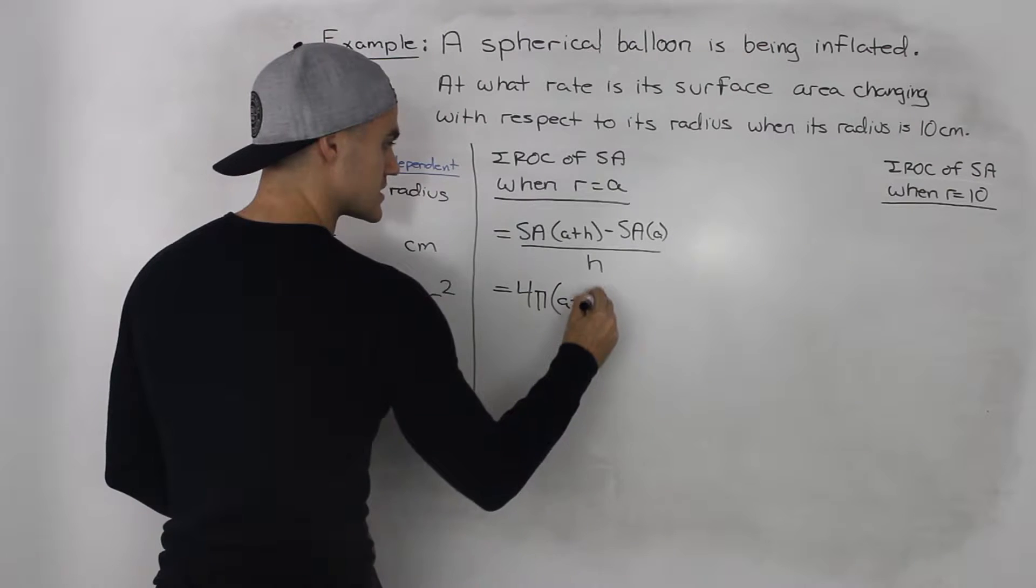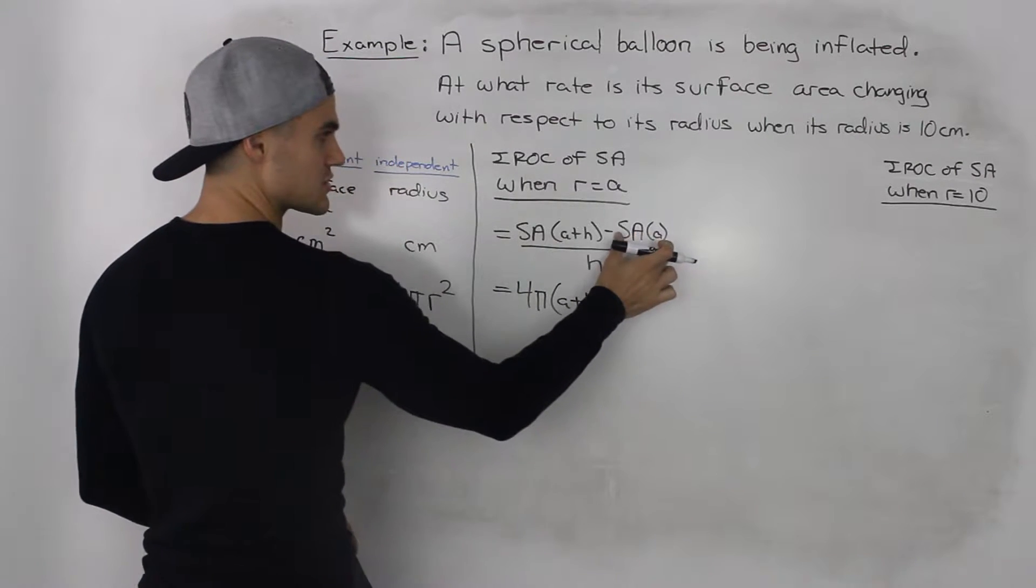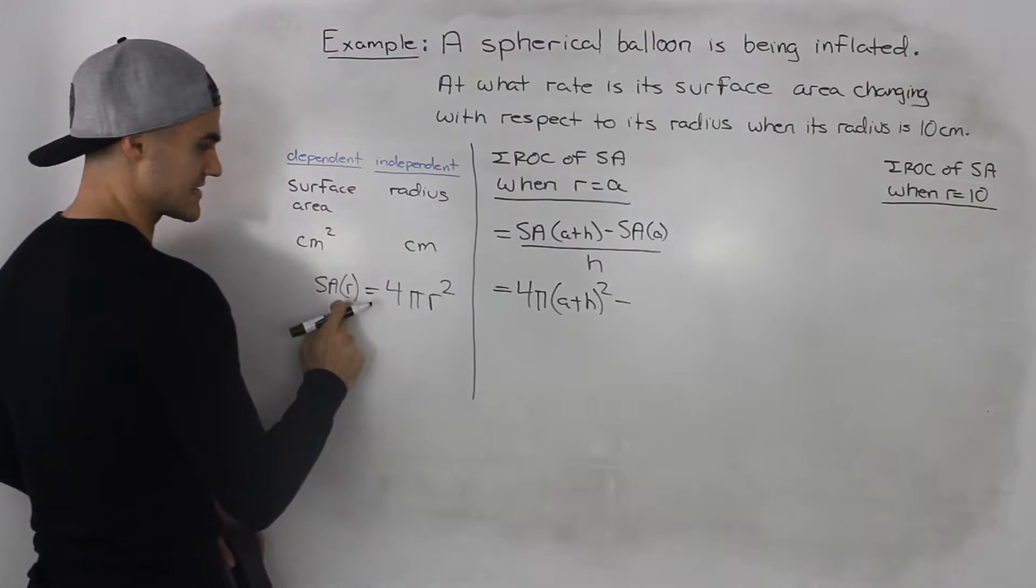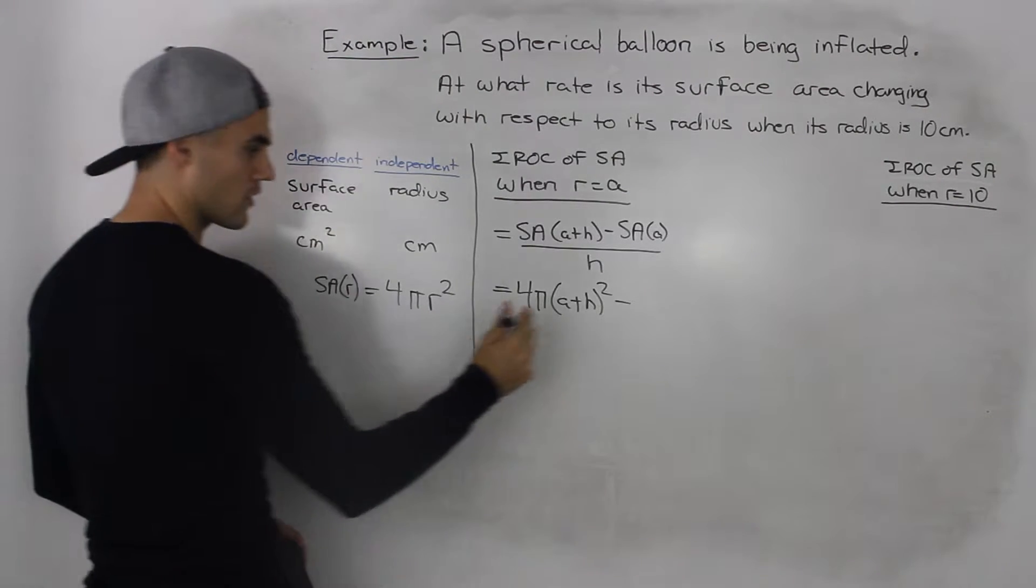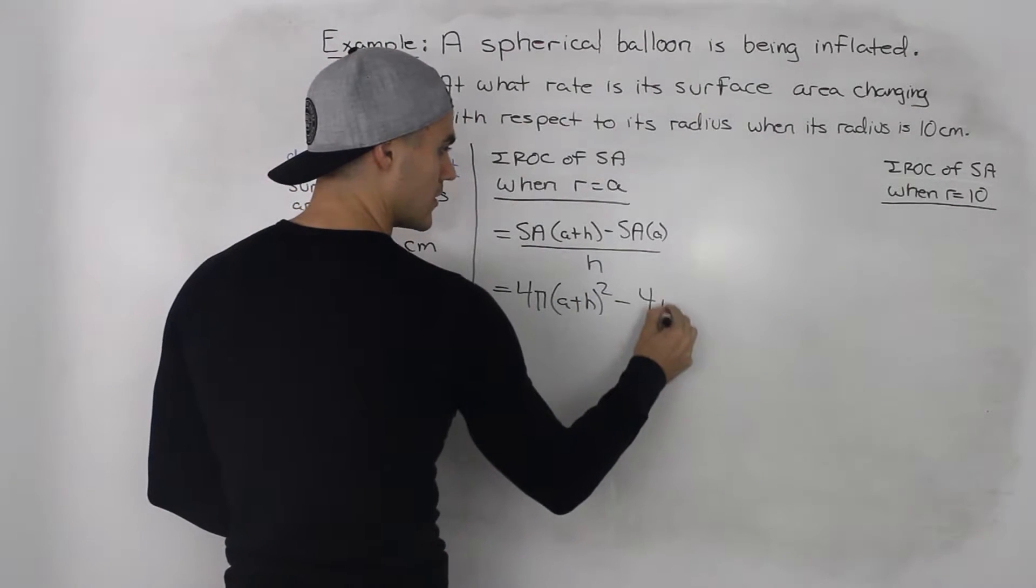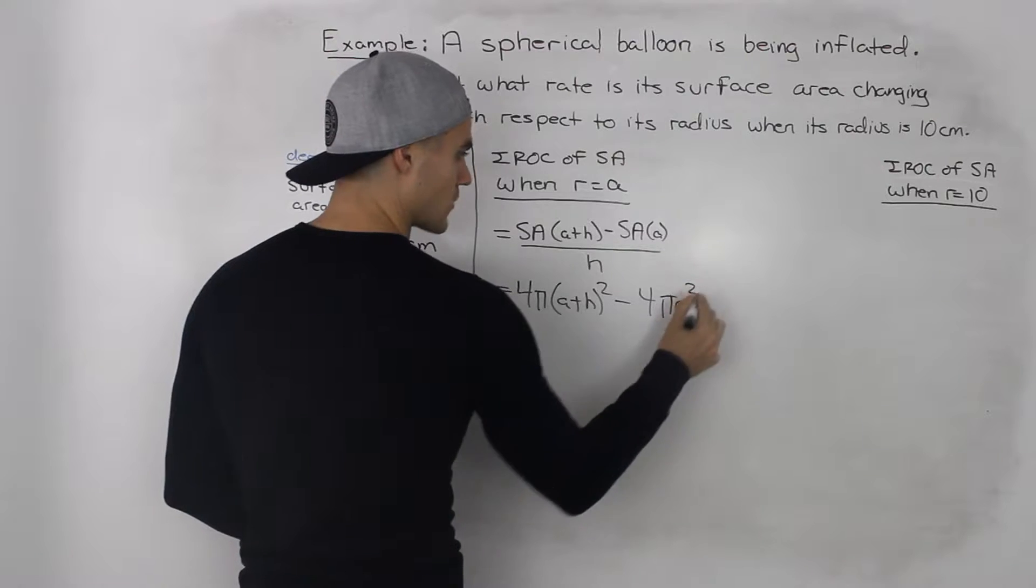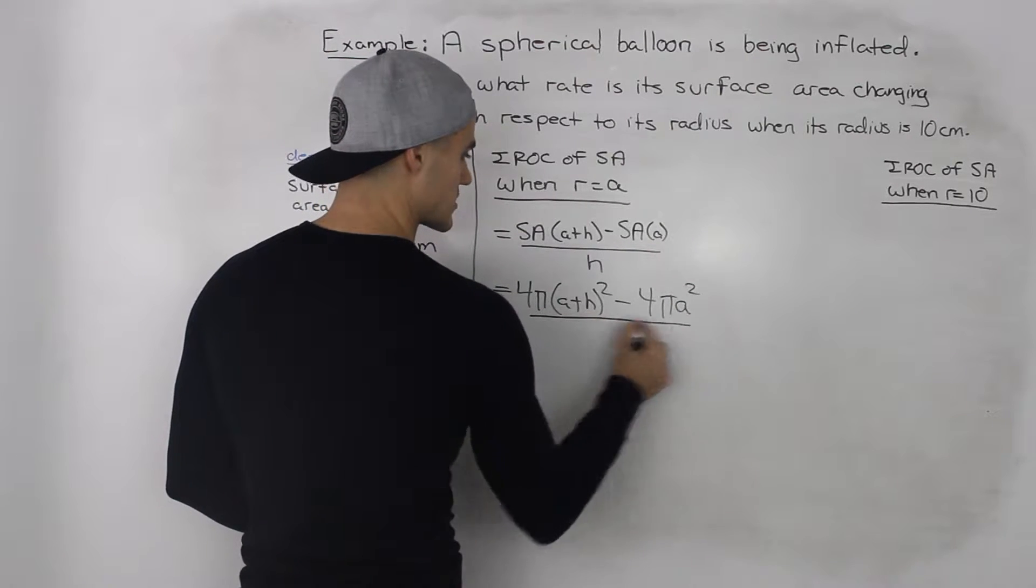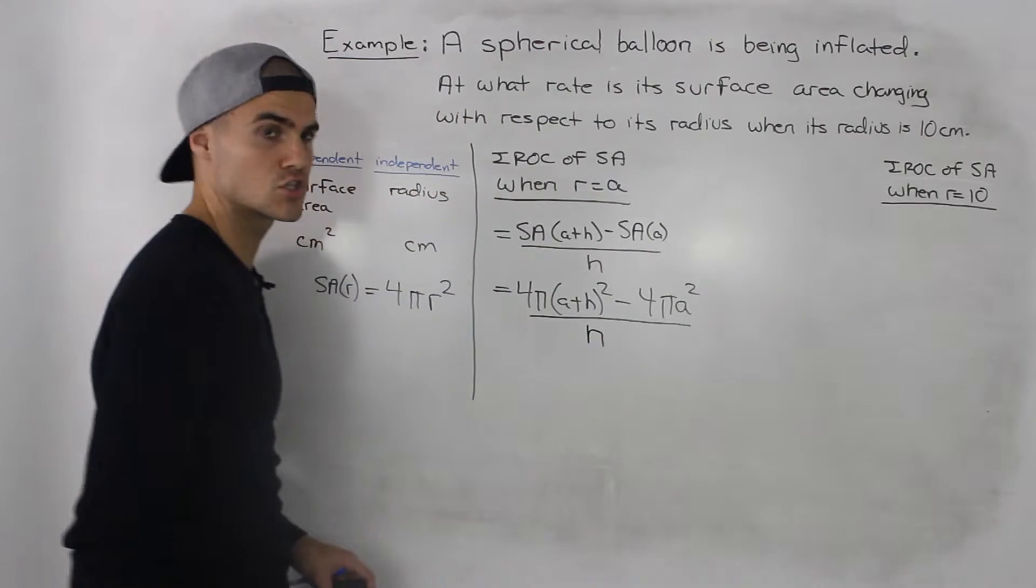...(a + h)² minus the surface area when the radius is a. So we would just plug in a for r. So that would be 4πa². And this is all over h.